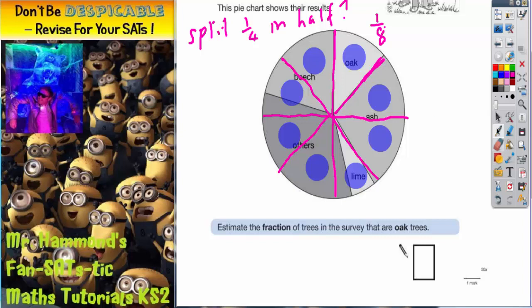So that is going to be my estimate for the first part of the question, 1/8. It does actually say estimate. So if it's not exactly 1/8 it doesn't really matter but it is roughly 1/8 of the whole pie chart.